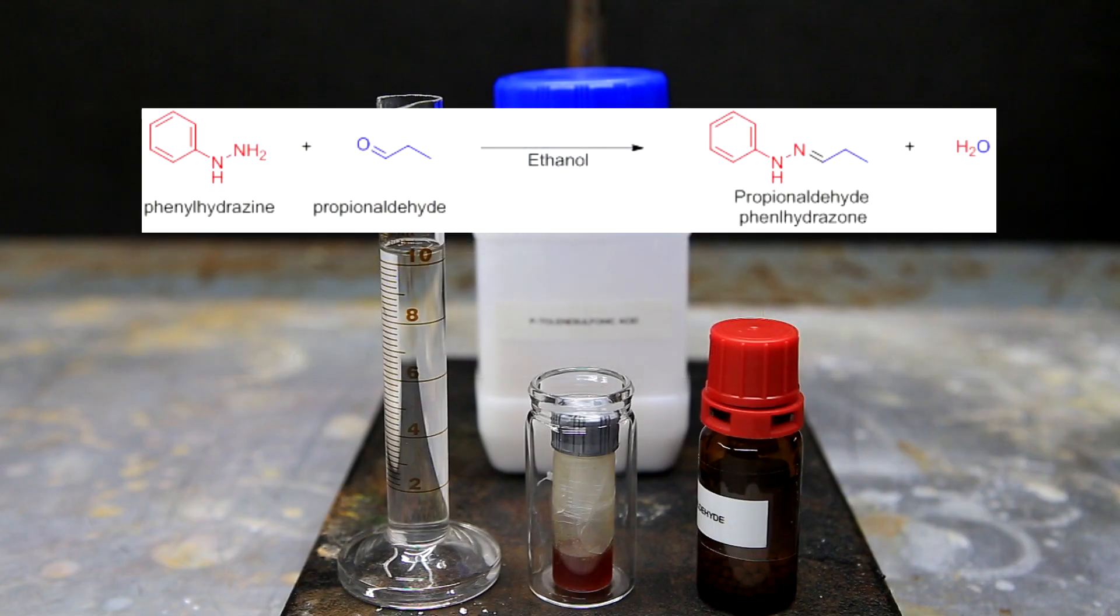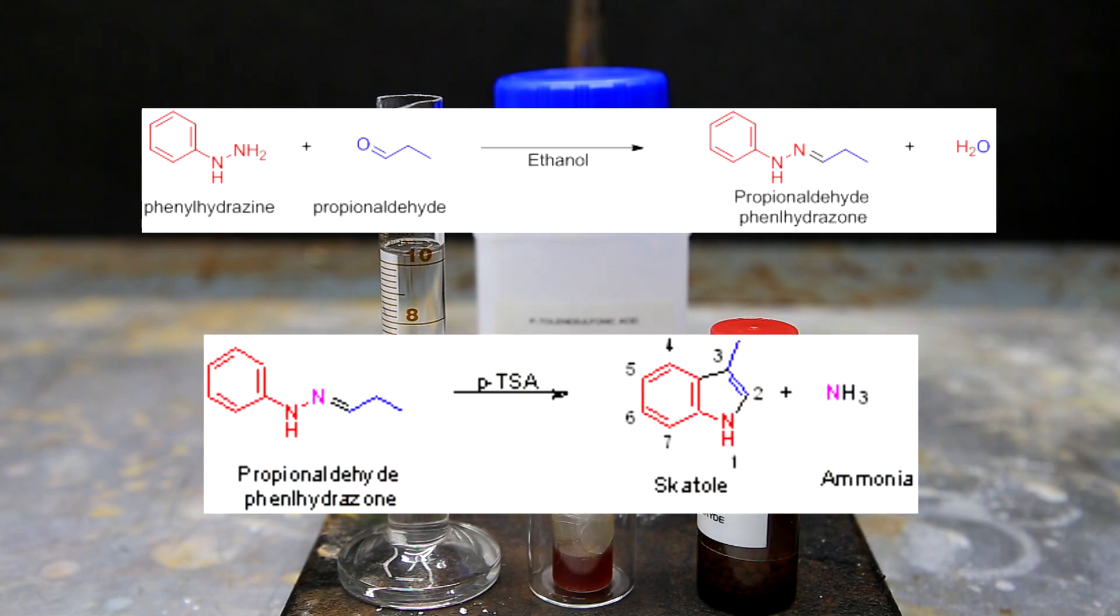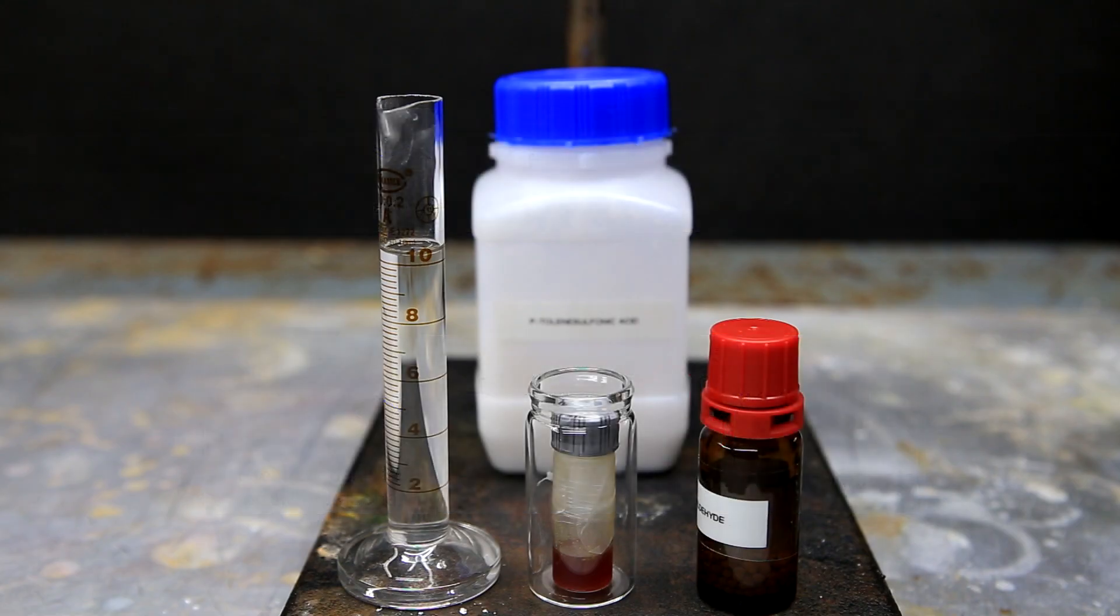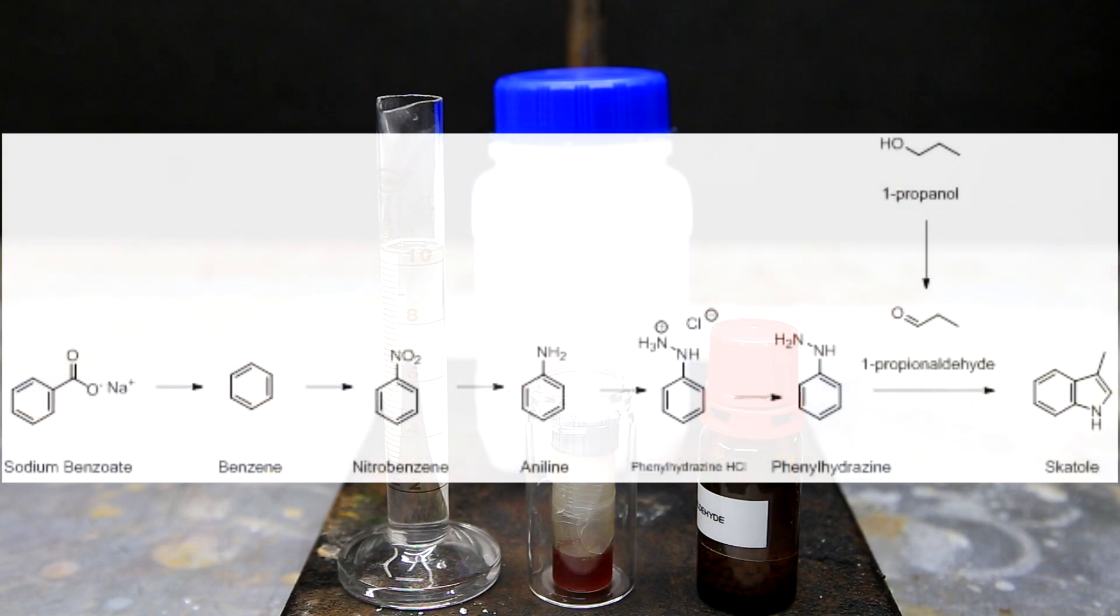To make skatol, we use an unsubstituted phenylhydrazine and propionaldehyde. In the first reaction, we form the phenylhydrazone, and then we use an acid catalyst to close it. Now, just as a final note, getting to skatol was a pretty long adventure. My two main starting materials were sodium benzoate and 1-propanol, and it took me quite a long time to get to the final product of skatol.